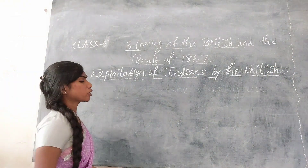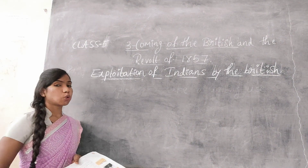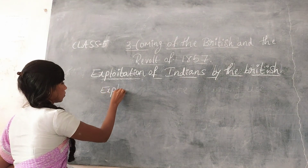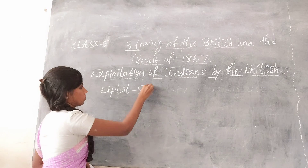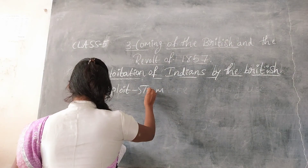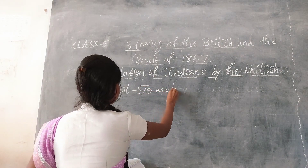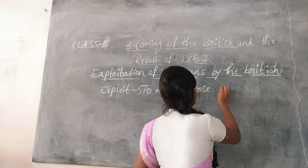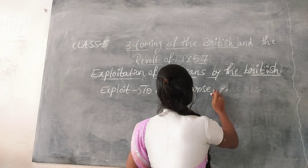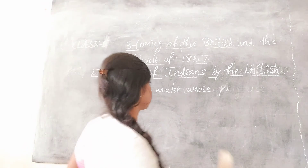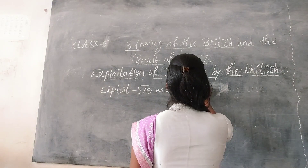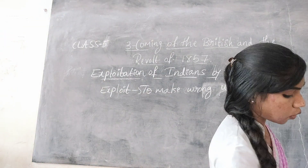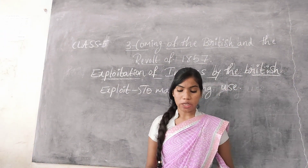What is the meaning of exploitation? It means to make a wrong use. So, how did the British also use the Indian people in a wrong way? Let's come, we will see.